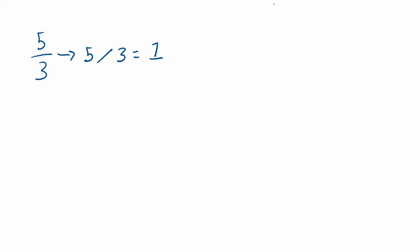Now if you recall from elementary school, the way we did this division was we had five divided by three. We asked how many times does three go into five? It goes one time. And what's the remainder? There are two left. Then we asked how many times does three go into two? It doesn't go any times, so we're done.